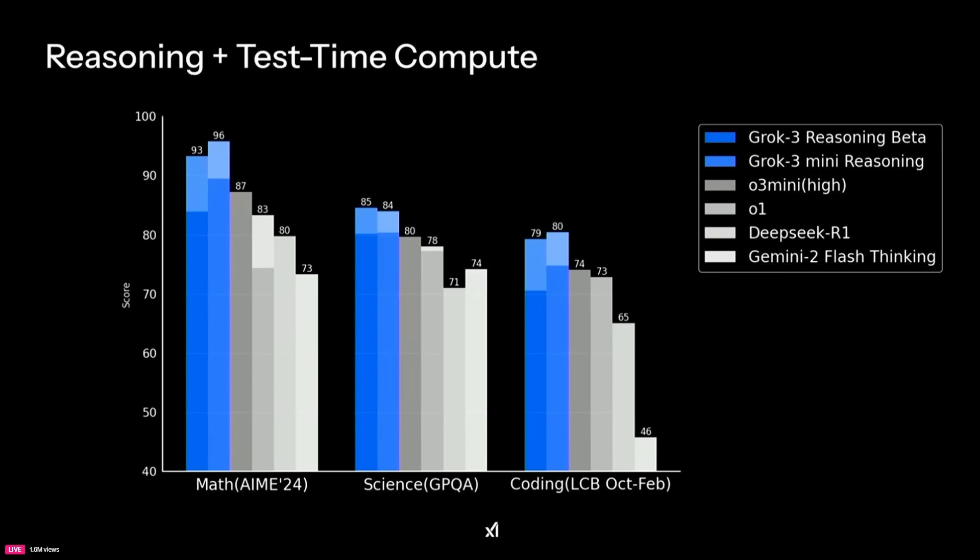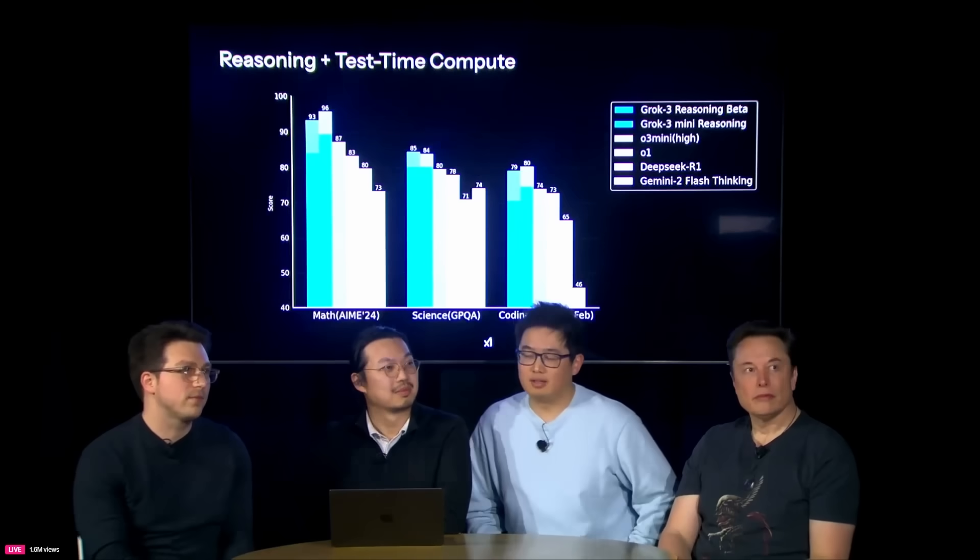Now, when we look at Grok-3's reasoning capabilities in terms of the thinking models, those two also managed to surpass even the recently debuted O3 Mini that many people heralded as the smartest AI on the planet. But now, that is unfortunately number two.